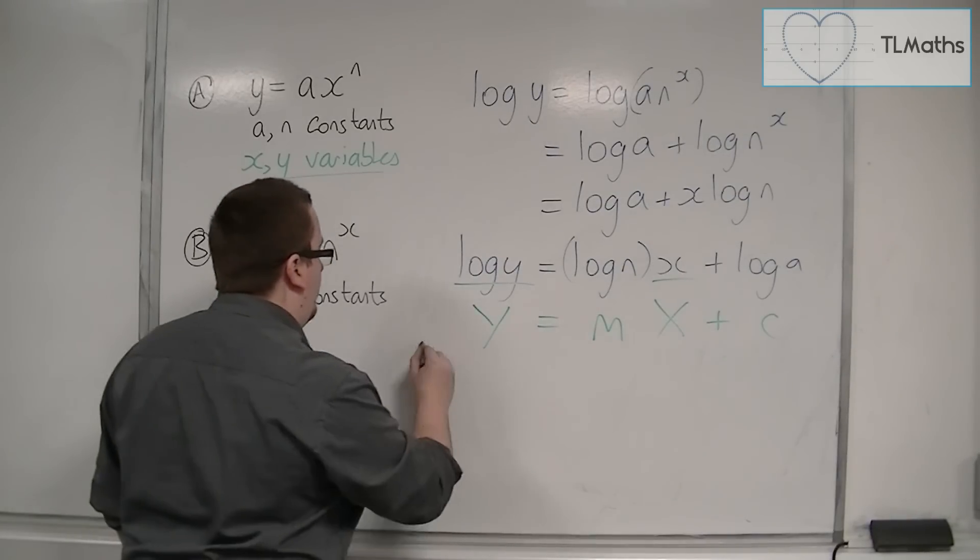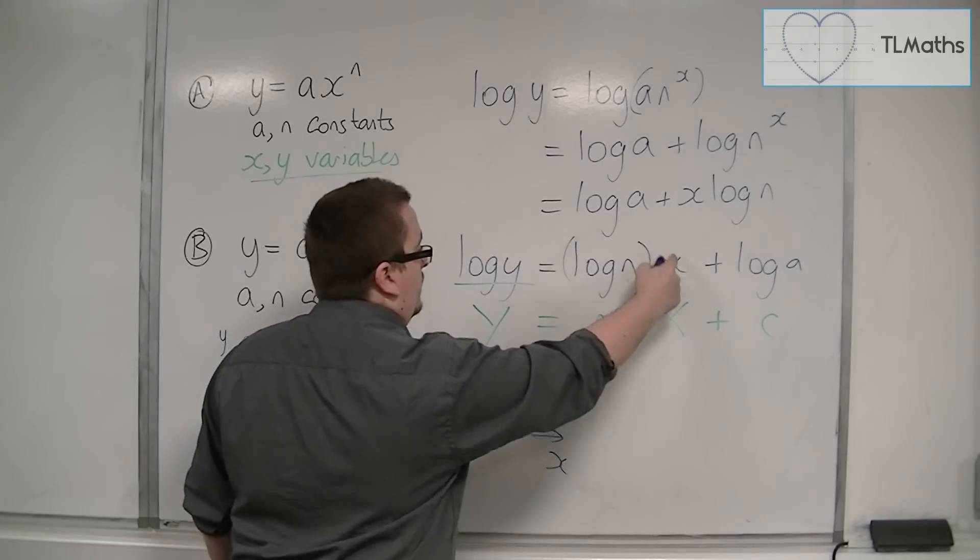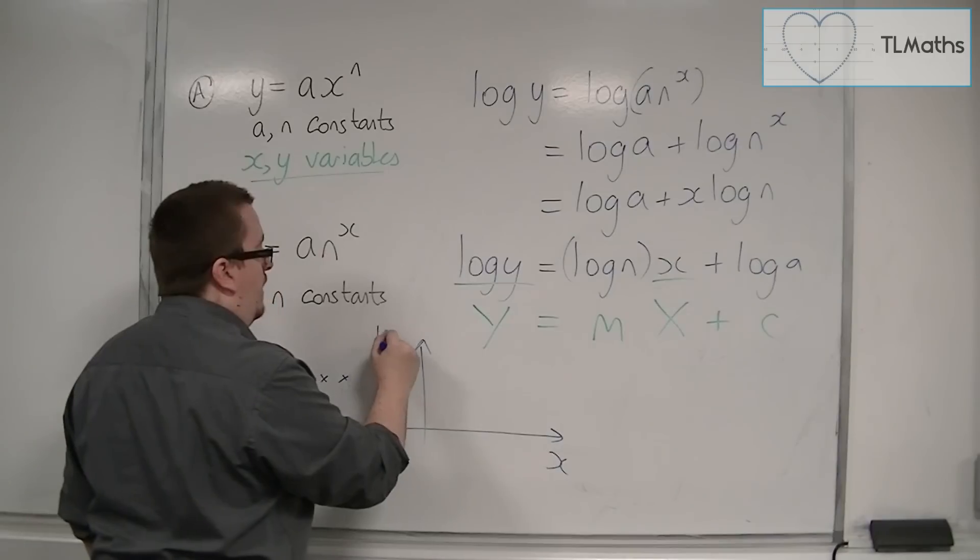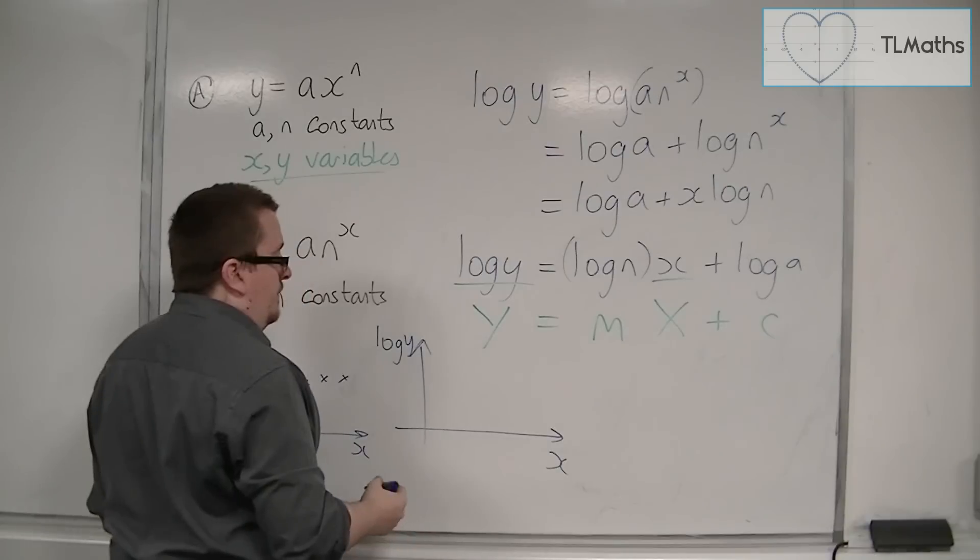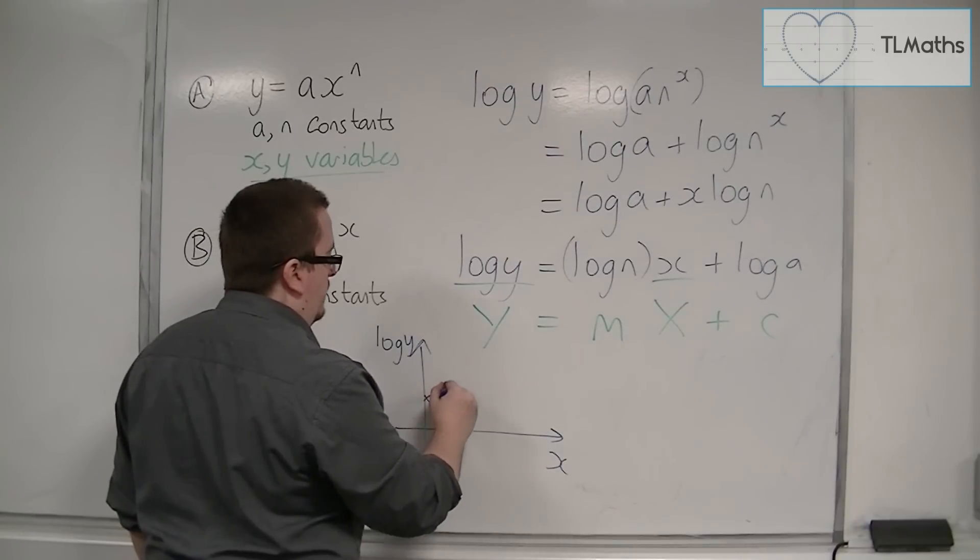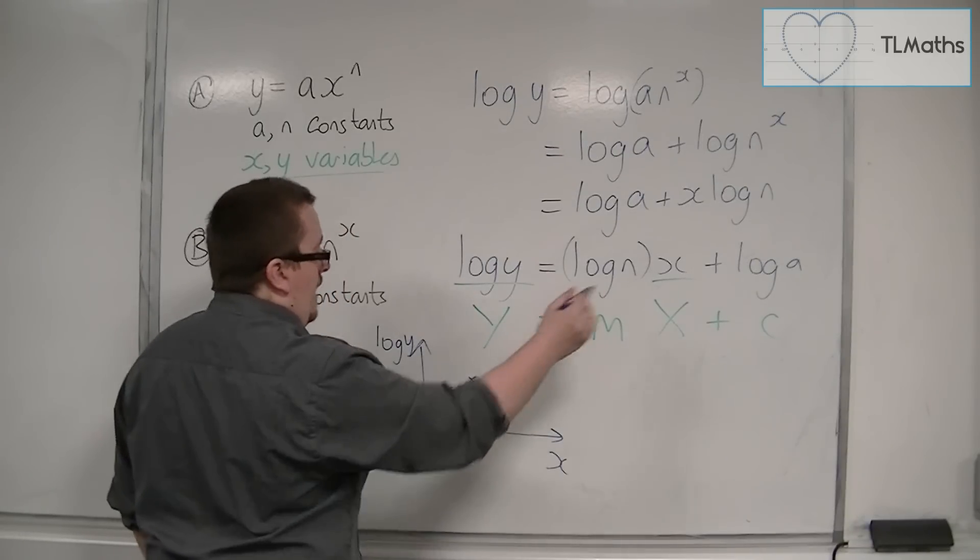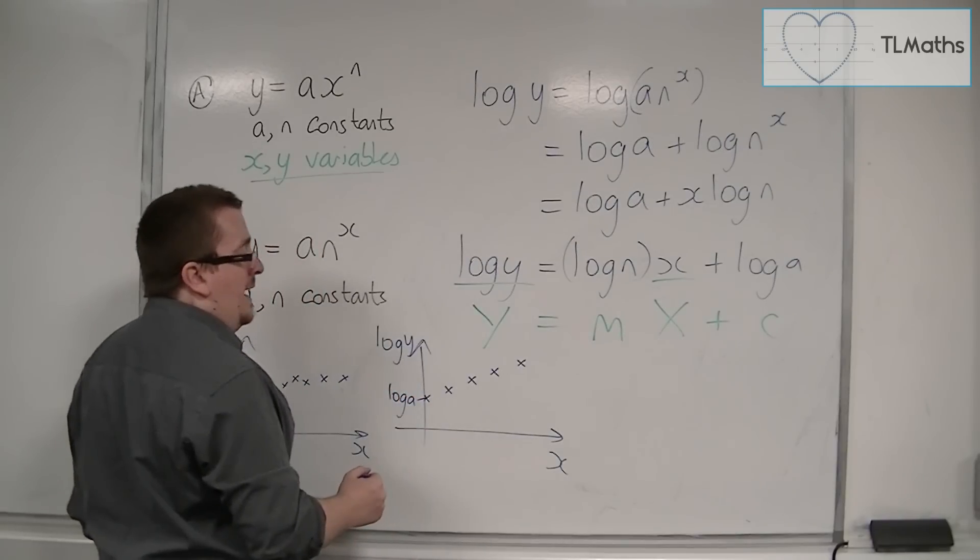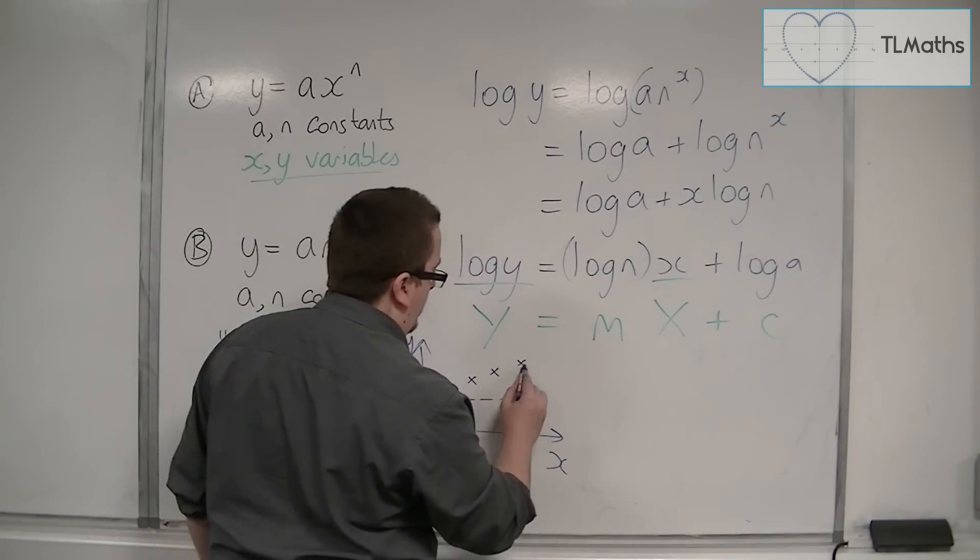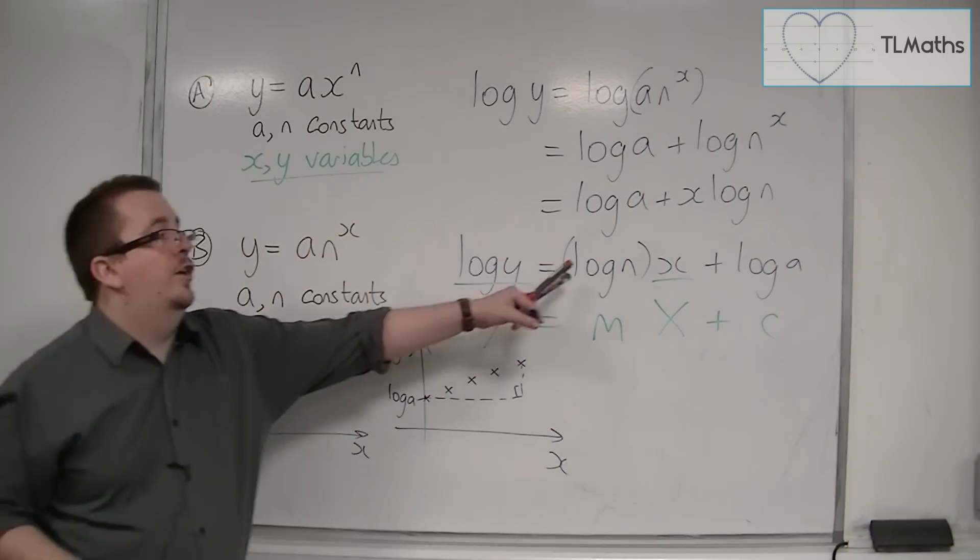Then I'm going to get a straight line where this intersection point with the y-axis is log a, and the gradient of the line will be log n, and that will enable me to find a and n.